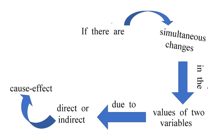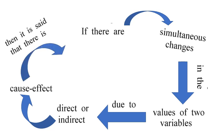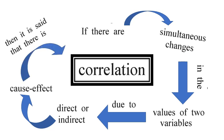If there are simultaneous changes in the values of two variables due to direct or indirect cause and effect, then it is said that there is a correlation. The word correlation is synonymous with cause and effect. Remember this definition properly.